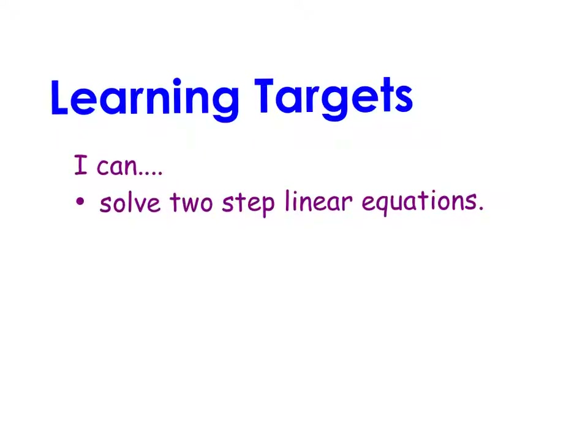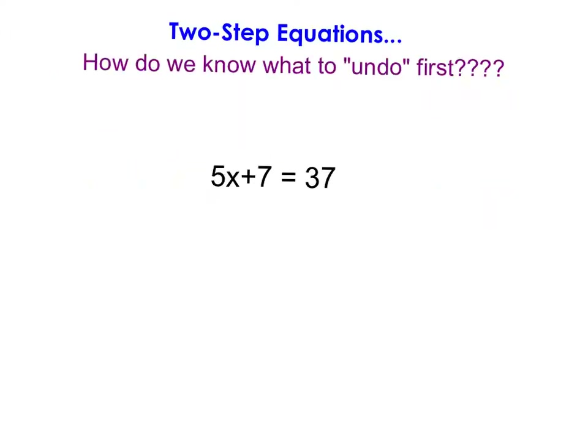In this video, we're going to talk about how we can solve two-step linear equations. Previously, you've learned how to solve one-step equations, and that stems from the idea of undoing what's happening to x, or the variable, so that you can get the variable by itself and find its value that makes the equation true.